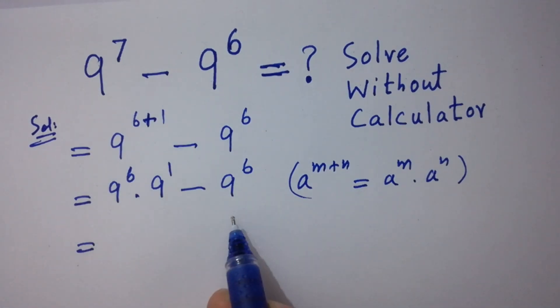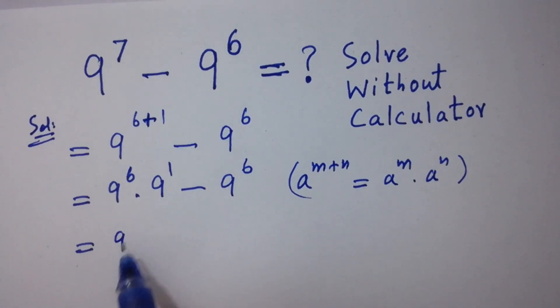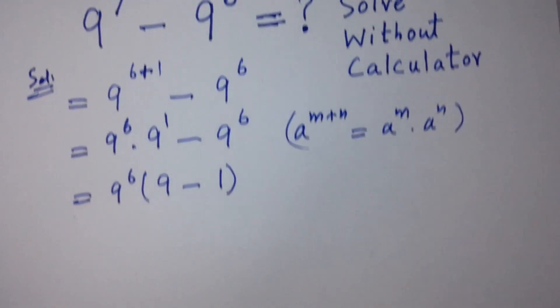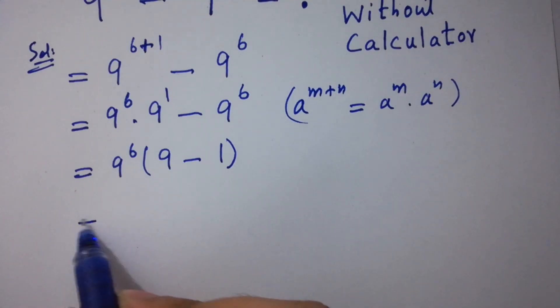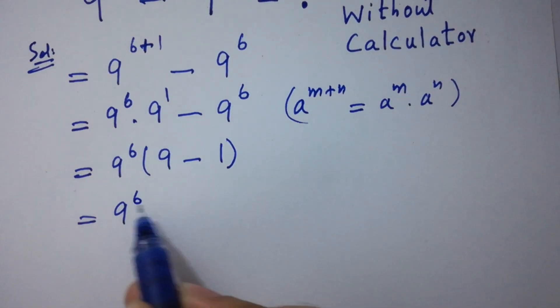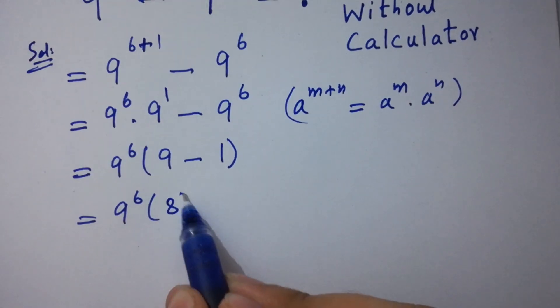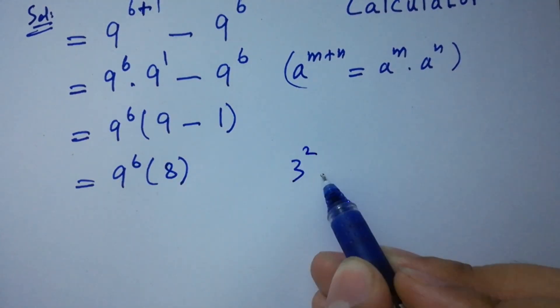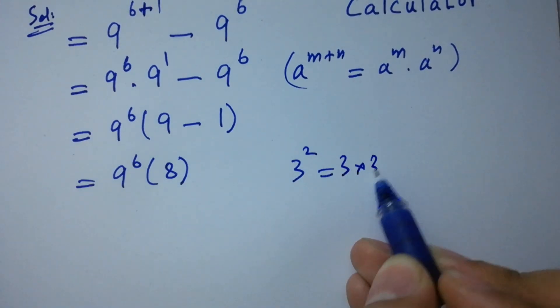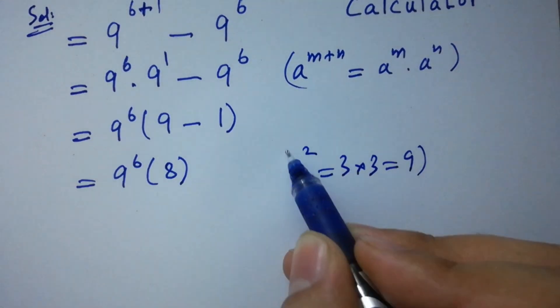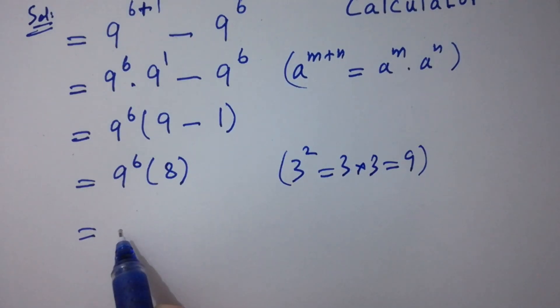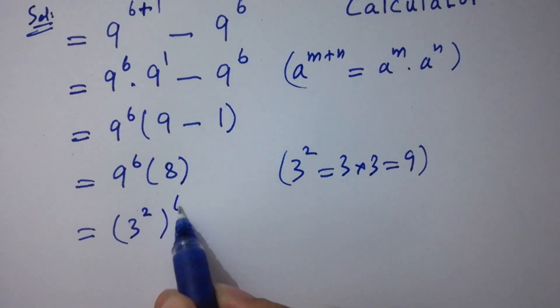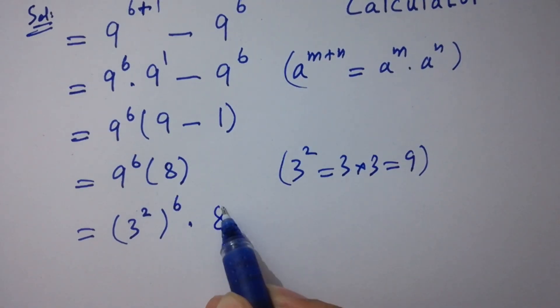Here, 9 to the power 6 can be common. We have 9 to the power 6 times 9 minus 1, which is 8. As 3 square equal to 3 times 3, 9 is 3 square, so we have 3 square to the power 6 times 8.